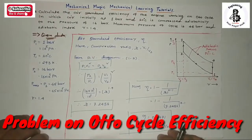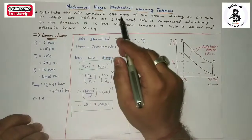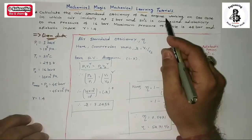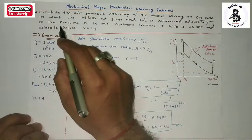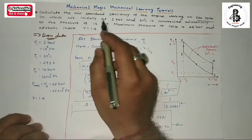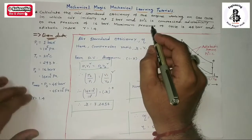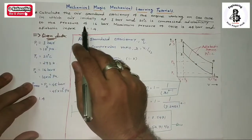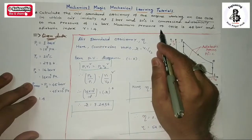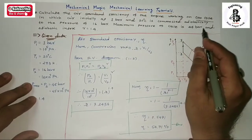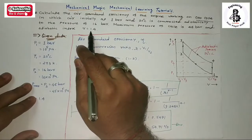Let us see the data given: calculate the air standard efficiency of the engine working on an Otto cycle, in which air initially at 1 bar and 20 degrees centigrade is compressed adiabatically to the pressure of 16 bar. The maximum pressure of the cycle is 45 bar and adiabatic index gamma equals 1.4.